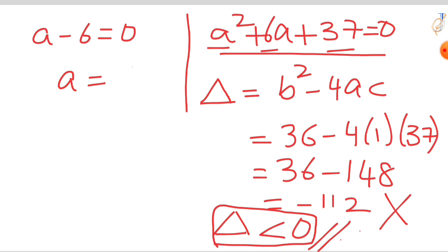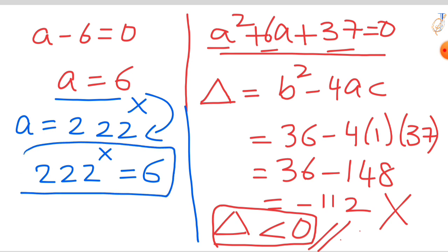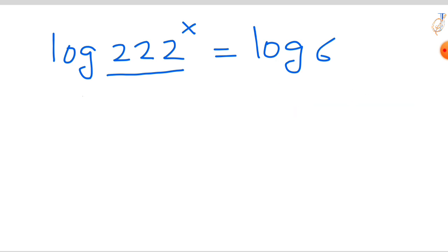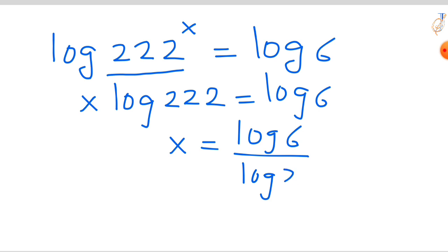We focus on the first equation: a minus 6 equals 0, giving a equals 6. Recall we assumed a equals 222 raised to the power of x. Substituting a equals 6 into this equation and taking logarithm on both sides: the left-hand side becomes x times log 222, using the rule log(m^a) = m·log(a). So x equals log 6 divided by log 222.